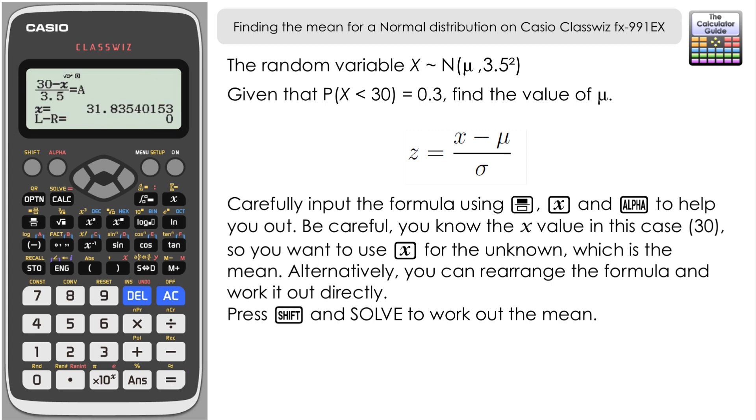And you can see here the value that we have come up 31.84 to two decimal places. Well that's going to be our mean. So the mean of this particular distribution is going to be 31.84.